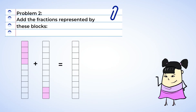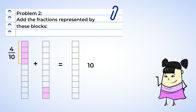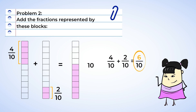Add the fractions represented by these blocks. It looks like there are ten parts in each rectangle, and this means we are working with tenths. There are four sections shaded in the first rectangle, so that represents four-tenths. And there are two sections in the second rectangle, so that's two-tenths. Four sections plus two sections would be six sections, so we can color in six sections. When we add four-tenths and two-tenths, we get six-tenths.